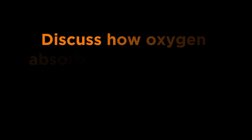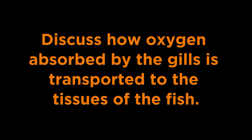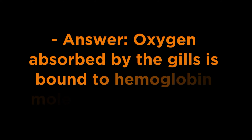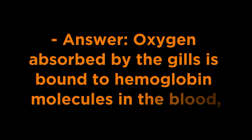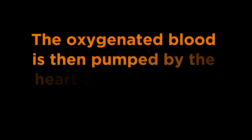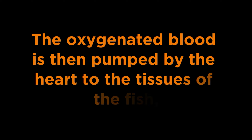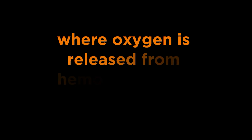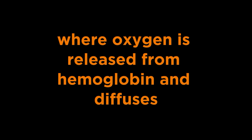Question 3 - Oxygen Transport: Discuss how oxygen absorbed by the gills is transported to the tissues of the fish. Answer: Oxygen absorbed by the gills is bound to hemoglobin molecules in the blood, forming oxyhemoglobin. The oxygenated blood is then pumped by the heart to the tissues of the fish, where oxygen is released from hemoglobin and diffuses into cells for cellular respiration.